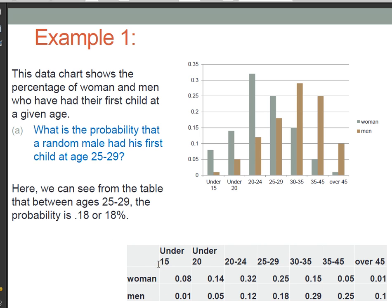Here we have under 15 years old, under 20 years old. We have a range from 20 to 24, 25 to 29, 30 to 35 and so on. These values are the percentages or the probabilities of women who have had their first child at these certain ages. So here from range 20 to 24 years old, about 32 percent of women have their first child at this age range. That's 0.32 or 32 percent.